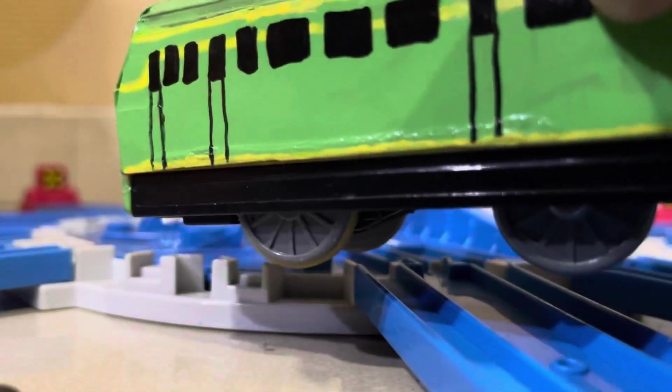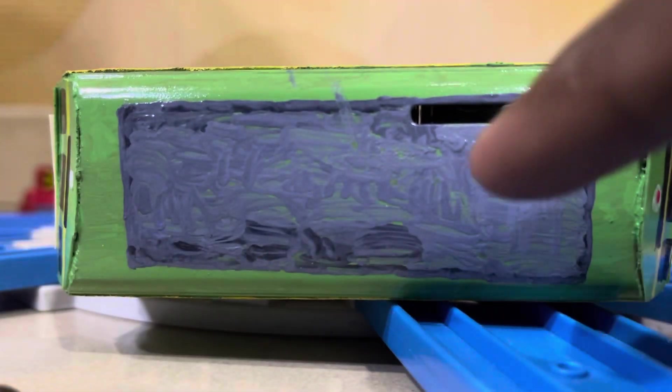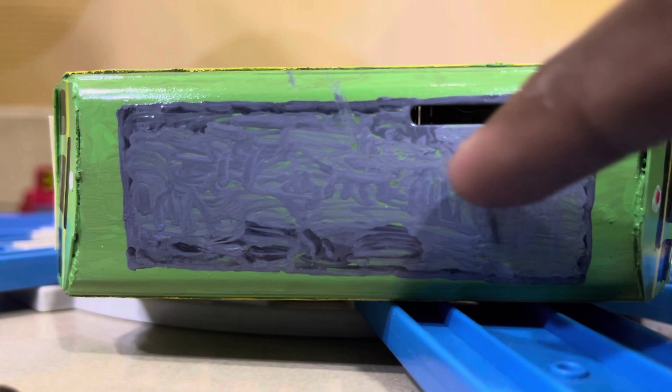And for the roof, this gray part was done by gray Uni paint markers.